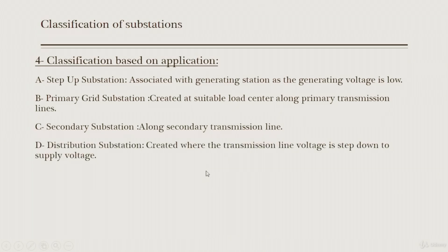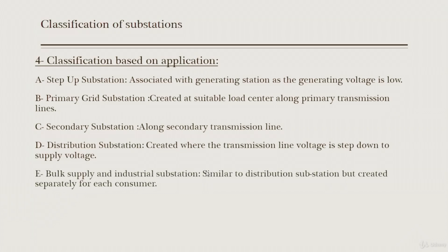The distribution substation is where the transmission line voltage is stepped down to supply voltage so that consumers can use the power. To summarize: the step-up substation steps up the voltage, the primary and secondary grid substations sit along their respective transmission lines, and the distribution substation steps down the voltage for customer use.